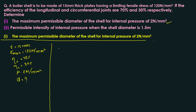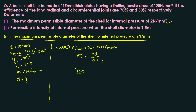For the first bit, since the problem does not specify whether the permissible stress is circumferential or longitudinal, we consider two cases. Case 1: σ_max is circumferential stress. Using σ_c = pd / (2t × η_l): 120 = (2 × d) / (2 × 15 × 0.7). Solving, diameter = 1260 mm, that is 1.26 m.